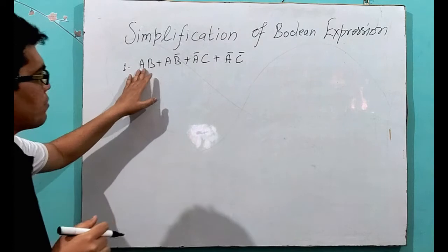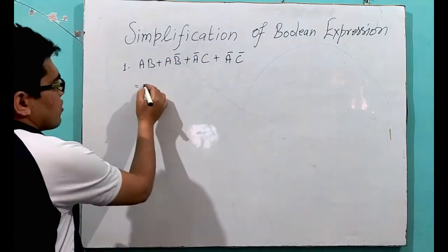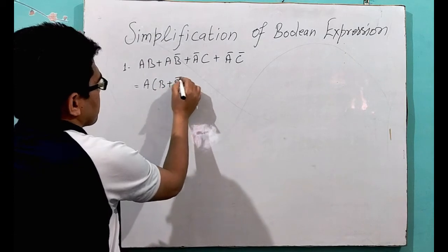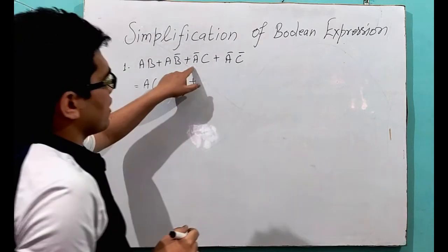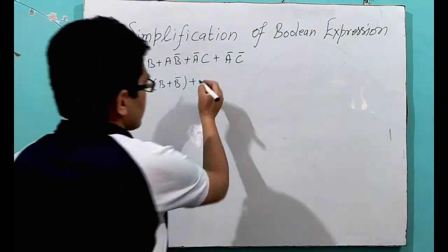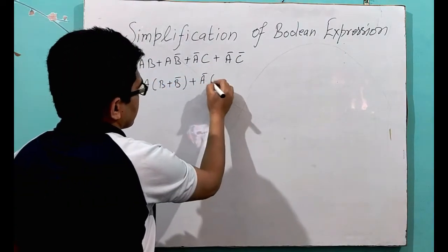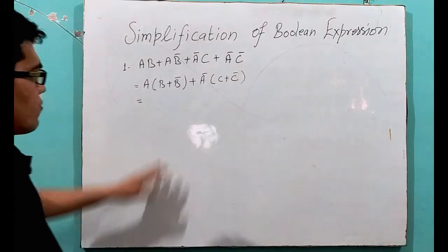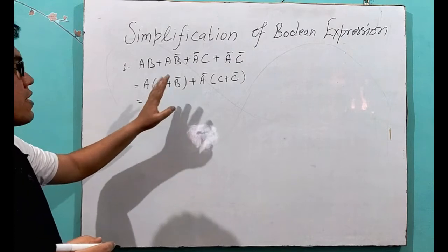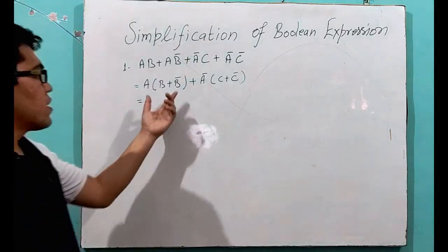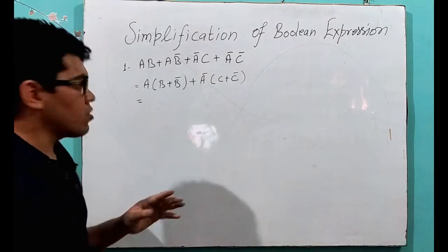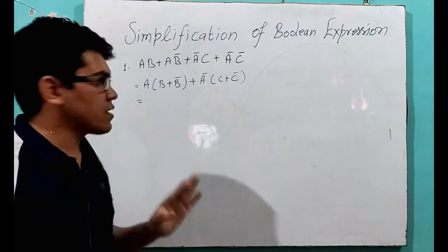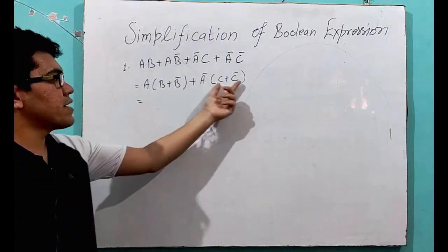We can see AB plus AB̄. A is common, so we can write A(B plus B̄). Then Ā is common in the remaining terms, so we write Ā(C plus C̄). Now, we know that B plus B̄ equals 1, and C plus C̄ equals 1, according to the complementarity law. So we apply the complementarity law.